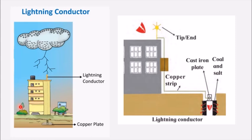Lightning causes a lot of damage, so to prevent damage we have devices called lightning conductors. A lightning conductor is a device used for protection from a lightning strike. These devices are put on tall buildings — the tip is connected by a copper wire to a pit dug in the ground, which contains an iron plate, coal, salt, and sometimes water. The water helps spread the electric charge quickly into the ground and prevents damage. Whenever an electrically charged cloud passes over the building, the electric charge flowing towards the building is conducted into the ground through the copper wire.